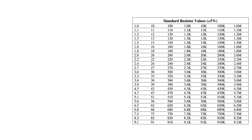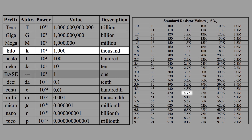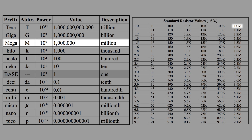Here is a list of standard resistor values. Compare the abbreviated numbers to those on the prefix chart. A resistor that is 4,700 ohms is called 4.7K ohms, or kilo ohms. A 100,000 ohm resistor is 100 kilo ohms. A 1,000,000 ohm resistor is 1 mega ohm.